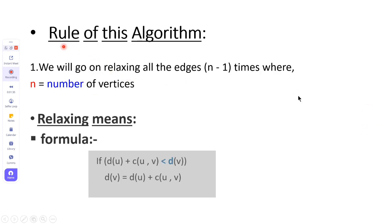The Bellman-Ford Algorithm has one rule: we will go on relaxing all the edges only n-1 times, where n equals the number of vertices. Relaxing means we update the distance between u and v. We have one formula: if distance(u) plus cost(u, v) is less than distance(v), then distance(v) equals distance(u) plus cost(u, v). This is the formula for finding the shortest path between all vertices using Bellman-Ford Algorithm.